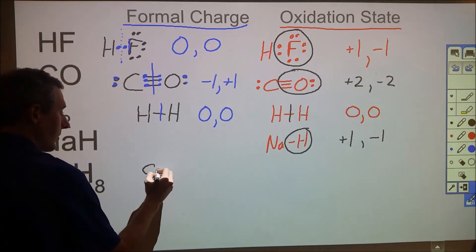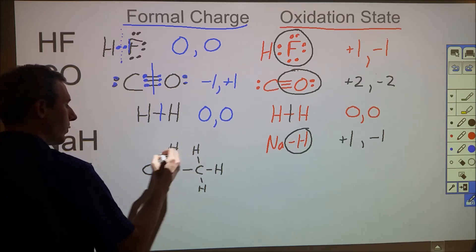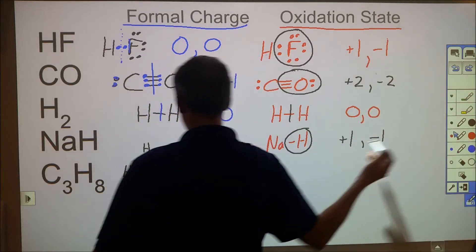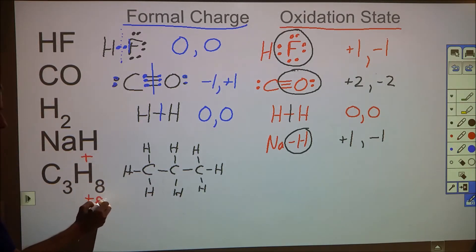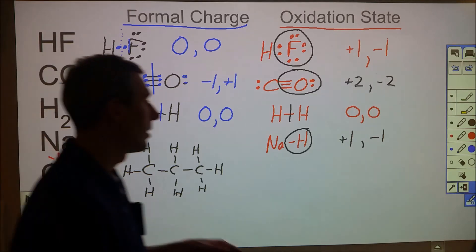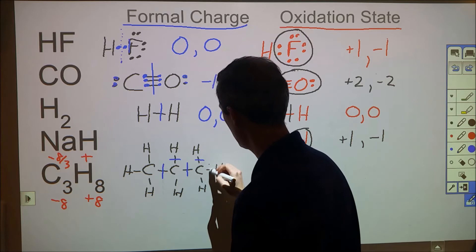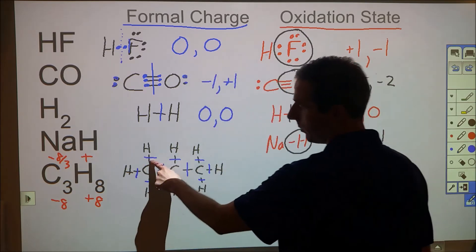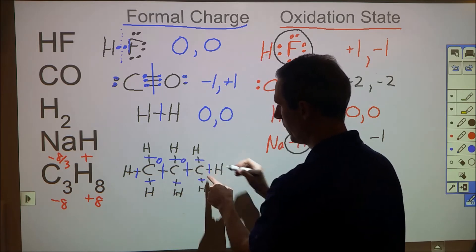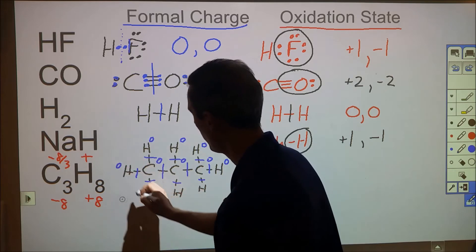Let's move on to C3H8. For formal charge: all carbon–carbon bonds split evenly, and all carbon–hydrogen bonds also split. Each carbon ends up with four electrons, which is what it should have, so each carbon gets a formal charge of zero. Each hydrogen has one electron when it should have one, so every hydrogen also gets zero formal charge — no formal charge anywhere in this molecule.